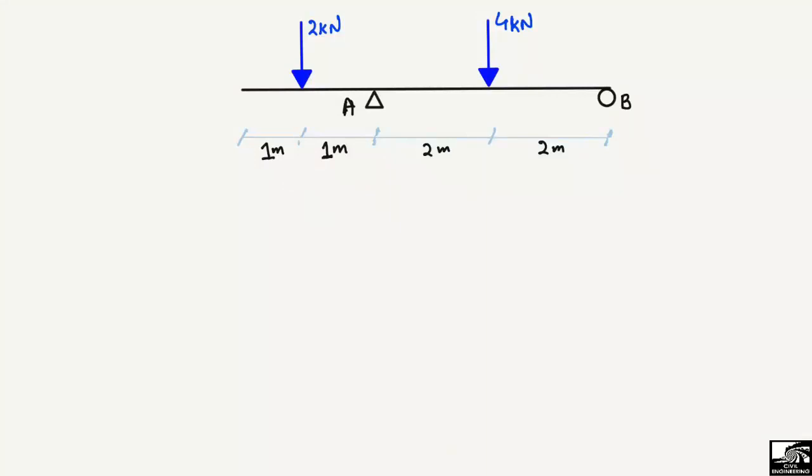Hello guys, welcome back to E7 Engineering YouTube channel. Please subscribe to our channel for daily engineering videos. Today we are going to analyze an overhanging beam and find out the support reactions, shear force, and bending moment diagram. This is the overhanging beam with two concentrated loads of 2 kN and 4 kN acting at different positions.